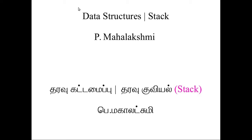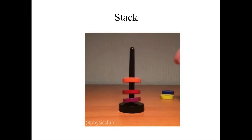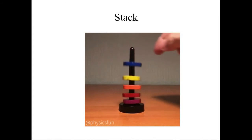Today we are going to see about the stack in data structure. The general meaning of stack is a pile of objects, or objects which are arranged one on top of another. Here I have shown you a picture of a stack, just like we are arranging objects one on top of the other. Similarly, in stack data structure we are going to arrange the data or elements one on another.